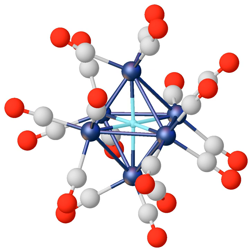In chemistry, a hydride is the anion of hydrogen, H-, or, more commonly, it is a compound in which one or more hydrogen centers have nucleophilic, reducing, or basic properties. In compounds that are regarded as hydrides, the hydrogen atom is bonded to a more electropositive element or groups.